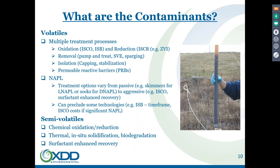You'll see in the discussions today combinations of technologies. Because of the 50-90 rule, a lot of times you're going after the source with a more aggressive technology and going after the residual plume with an MNA or a PRB — typically a more cost-effective approach.